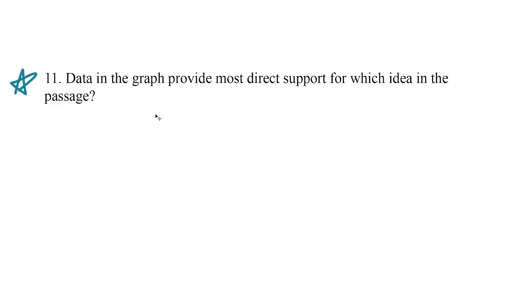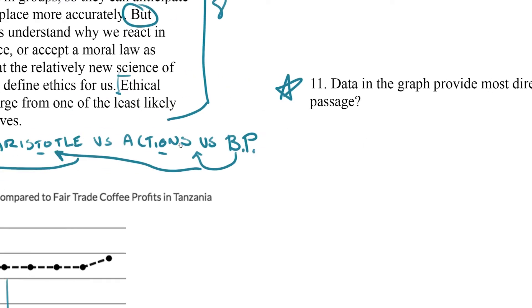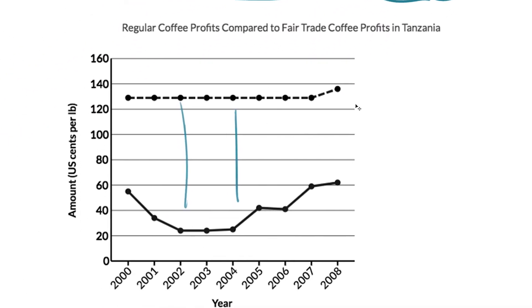Data in the graph provide the most direct support for which idea in the passage. Okay, so let's take a look at that graph one more time. We see that consistently, fair trade coffee makes more money than regular coffee does.